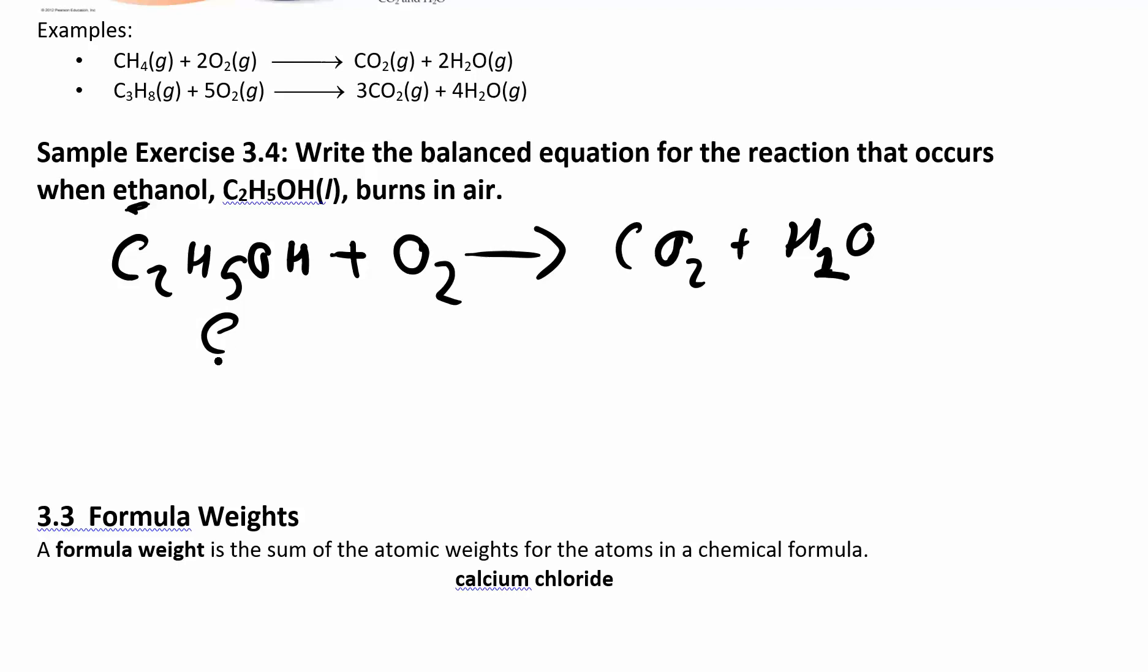We're going to assume complete combustion. Whenever it says burns in air, assume it's complete and you're getting carbon dioxide and water unless they tell you otherwise. Let's follow our CHO method to balance. I have two carbons, so I'm going to put two in front of carbon dioxide. I have five plus one - six hydrogens. So I'll put a three to give me six hydrogens. Then I count oxygen: two times two is four plus three is seven. I know that's an odd number, but I already have one oxygen over here.